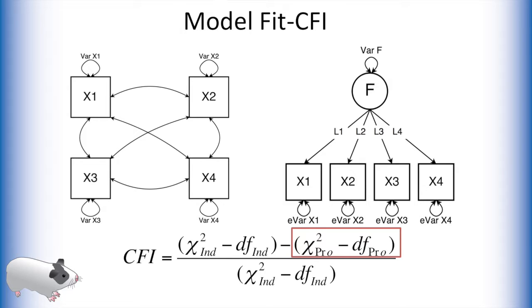However, if our factor model is just as likely as the saturated model, the value in the red square here tends to zero. Thus, CFI is one. So, we want CFI to be as close to one as possible. In practice, CFI values over 0.9 tend to be considered adequate fit.